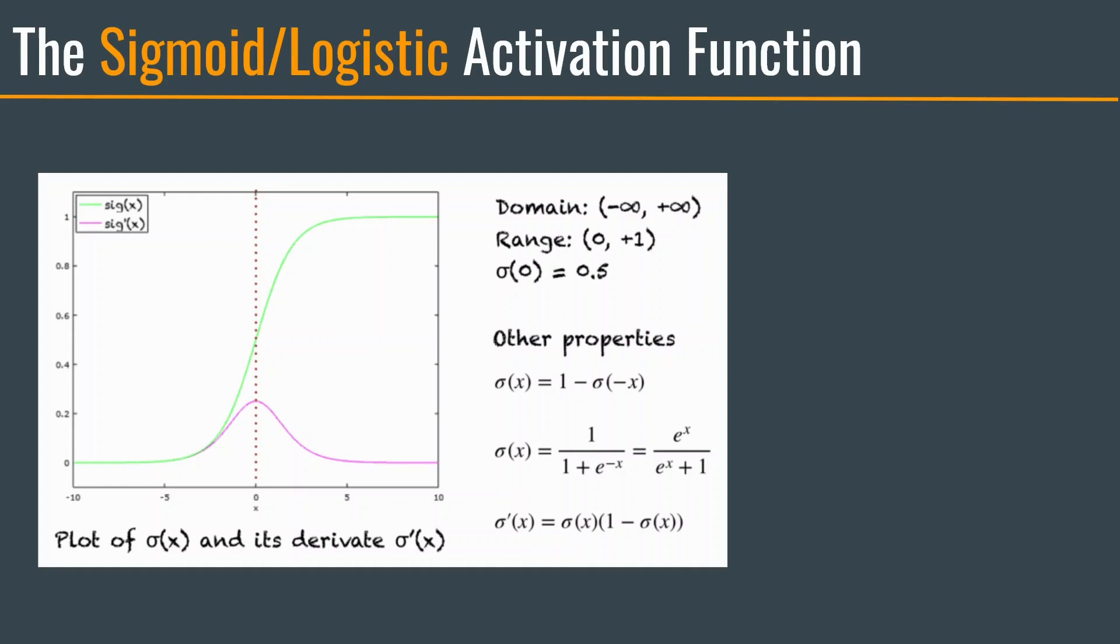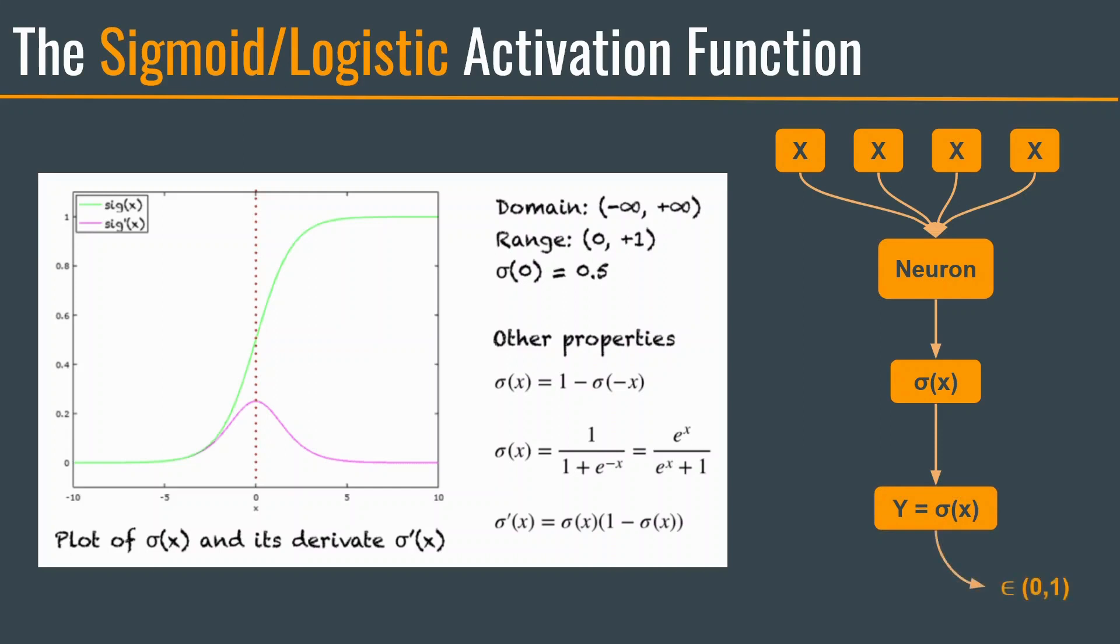Let's see its working. First, the inputs are fed to a particular neuron. The neuron produces its output, but the output is passed through the sigmoid activation function, which gives us the final output. The final output always ranges between 0 to 1.